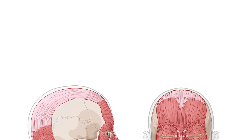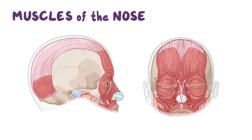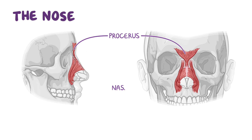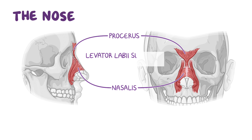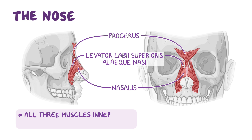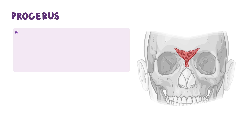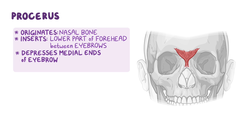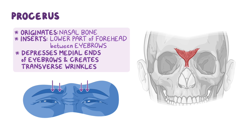Now let's move on to the nose. There are three muscles of the nose: the procerus, nasalis, and the levator labii superioris alaeque nasae. All three are innervated by the zygomatic nerve. The procerus originates on the nasal bone and the lateral nasal cartilage and inserts onto the skin in the lower part of the forehead, between the eyebrows. When it contracts, it depresses the medial ends of the eyebrows and creates transverse wrinkles on the dorsum of the nose.